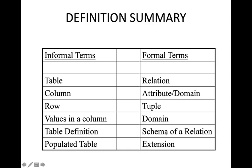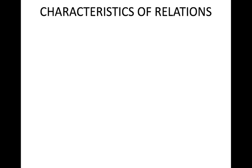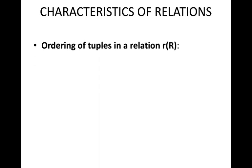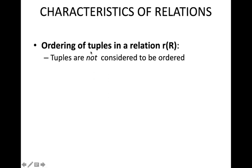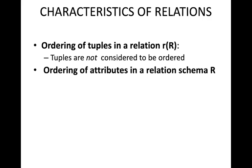Now we look at the characteristics of relations. Regarding ordering of tuples in a relation: tuples are not considered to be ordered. There is no ordering among tuples — any row can appear first. It is not mandatory that admission number one appears first and number two second. Tuples have no required ordering.